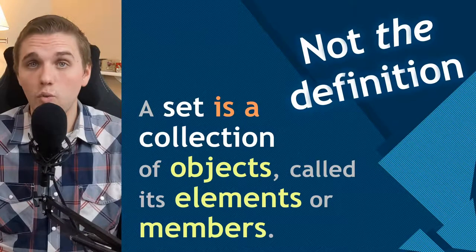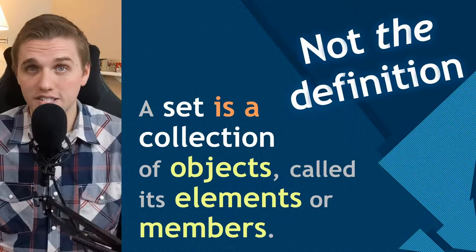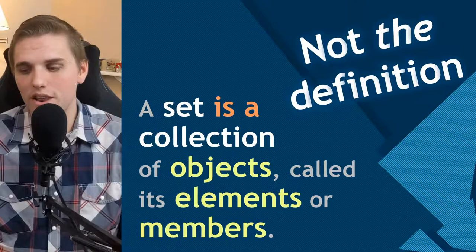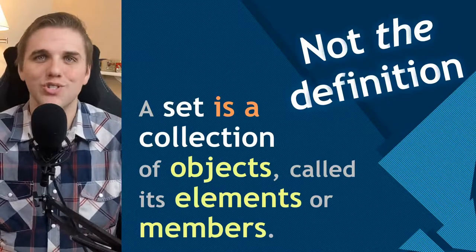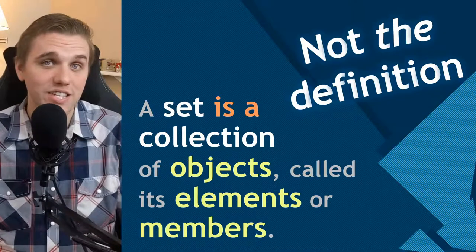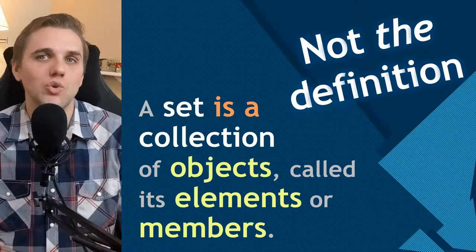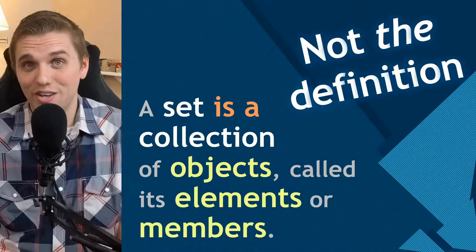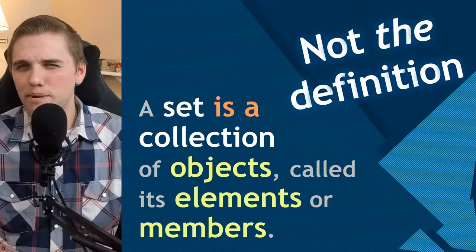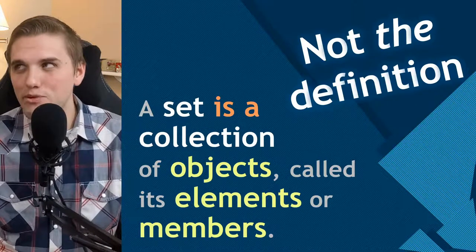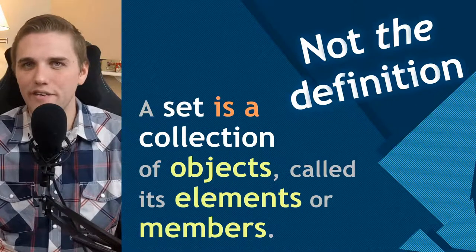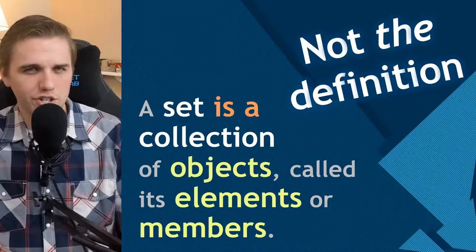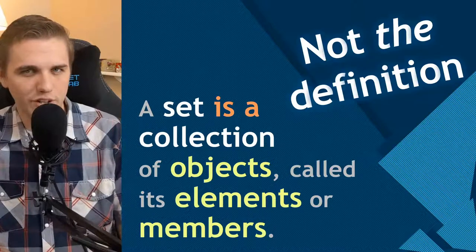So if we wanted to define a set, we would have to introduce the ZFC axioms, and that's what we're trying to avoid here. So what do we mean by a description instead of a definition? What's the difference?